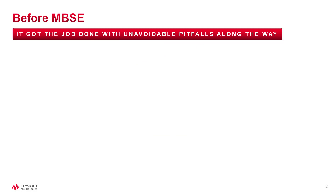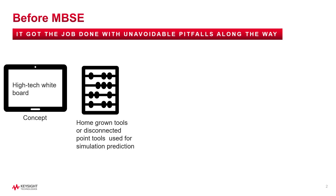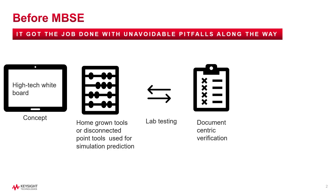Before we get into the details of model-based system engineering, let us have a quick overview of a traditional lifecycle of a system design. The concept was written down, sometimes using a whiteboard. Homegrown tools or a set of disjointed simulation tools were used to verify the functionality of the concept. Lab testing followed suit, and an interaction existed between simulation and lab testing. A paper trail was created to track progress, and lastly the system went into production. Of course, this depiction is simplified, yet the traditional lifecycle of a system was prone to error and inevitably was time-consuming.